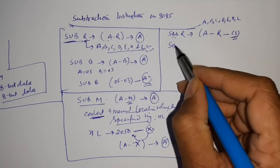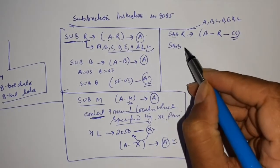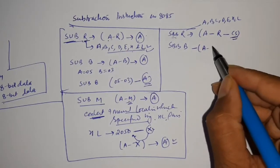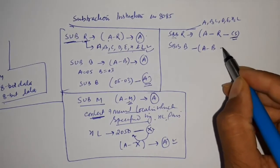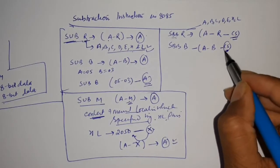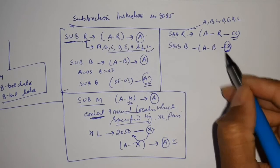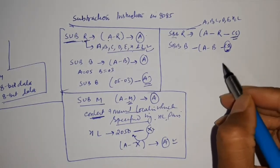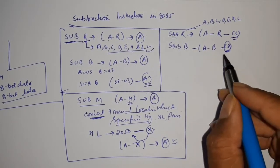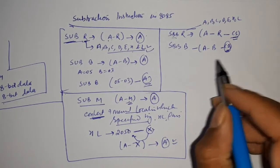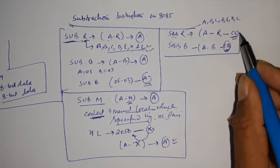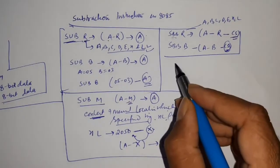Suppose I am writing SBB B. The meaning of this will be A minus B minus carry flag (CY). The CY value can be taken from the previous operation. By the previous operation you can check whether the value of CY is 0 or 1. This is how this instruction works.